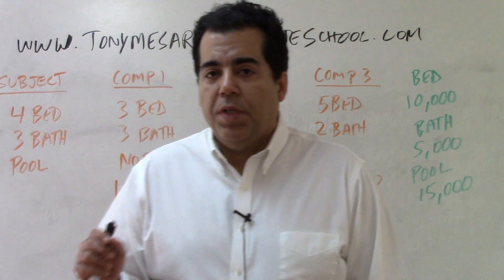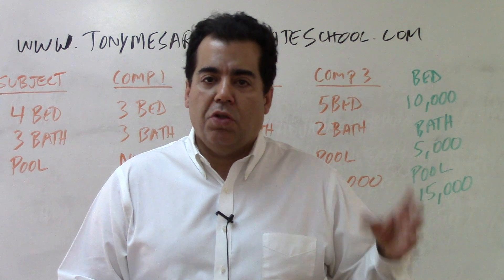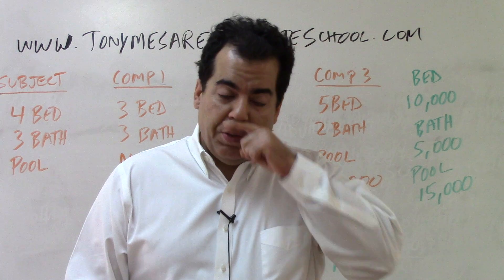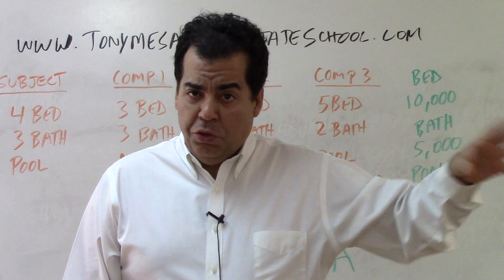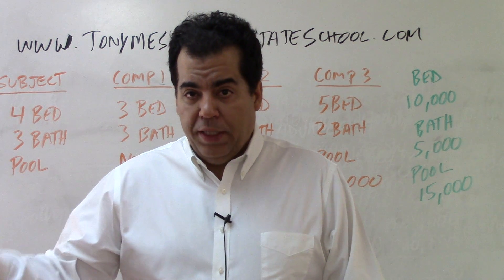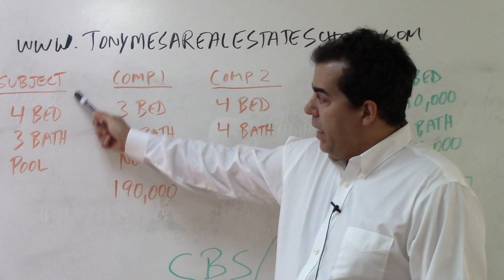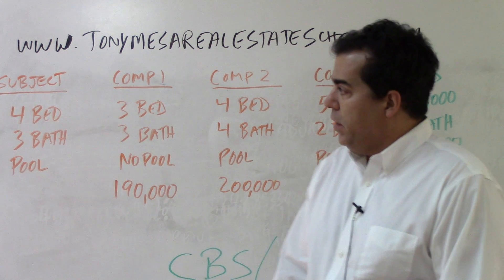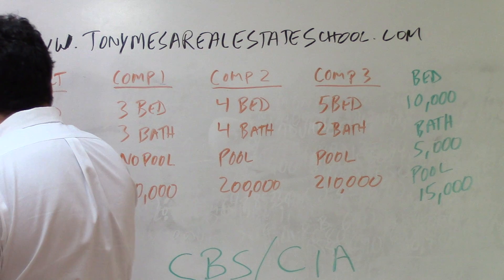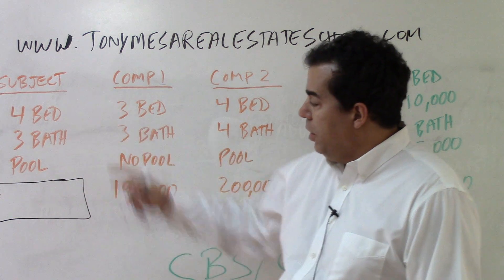This is a very good approach when you have similar properties that have sold recently in the same geographic area. It's called the sales comparison approach or comparable sales approach because you are using comparable sales to get an estimate of value for the subject property. The subject property is the property being appraised — in this example, a four-bedroom, three-bathroom with a pool — and we want to figure out its estimate of value.